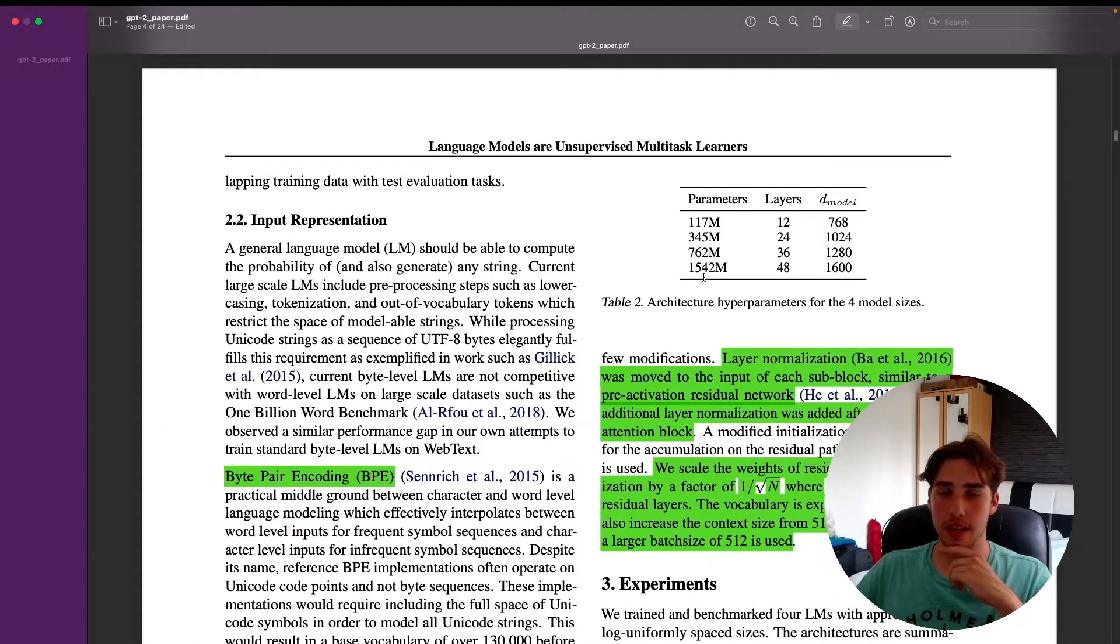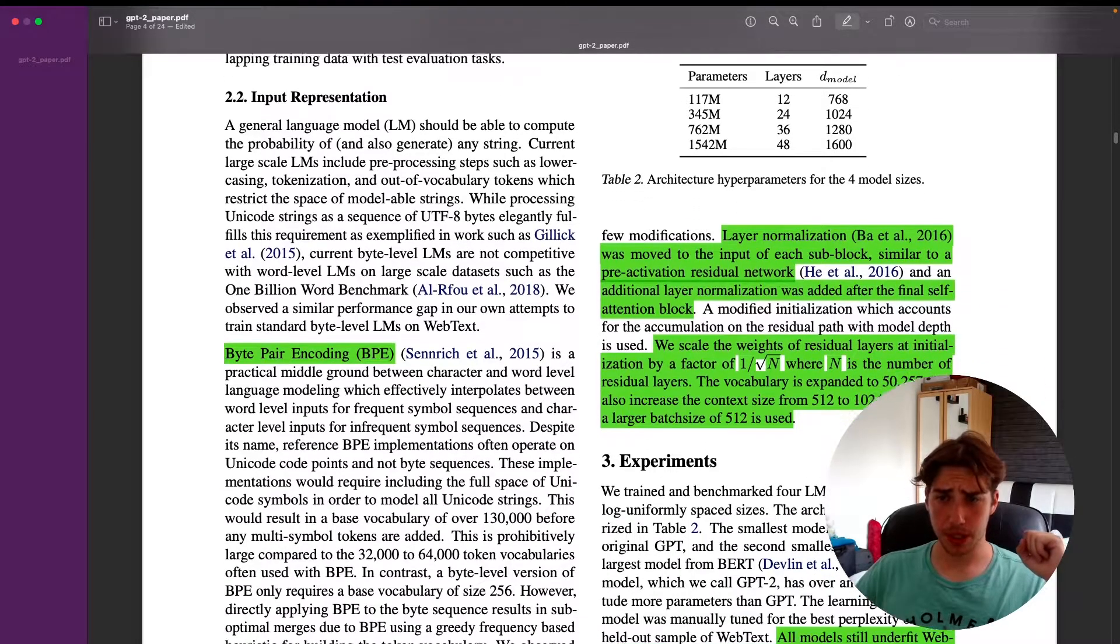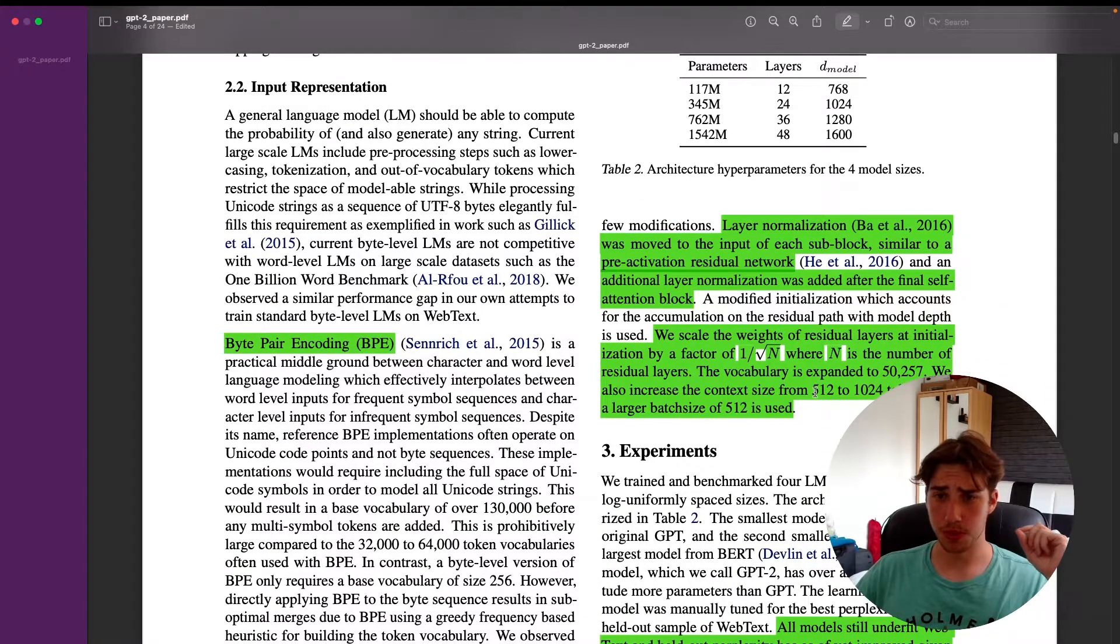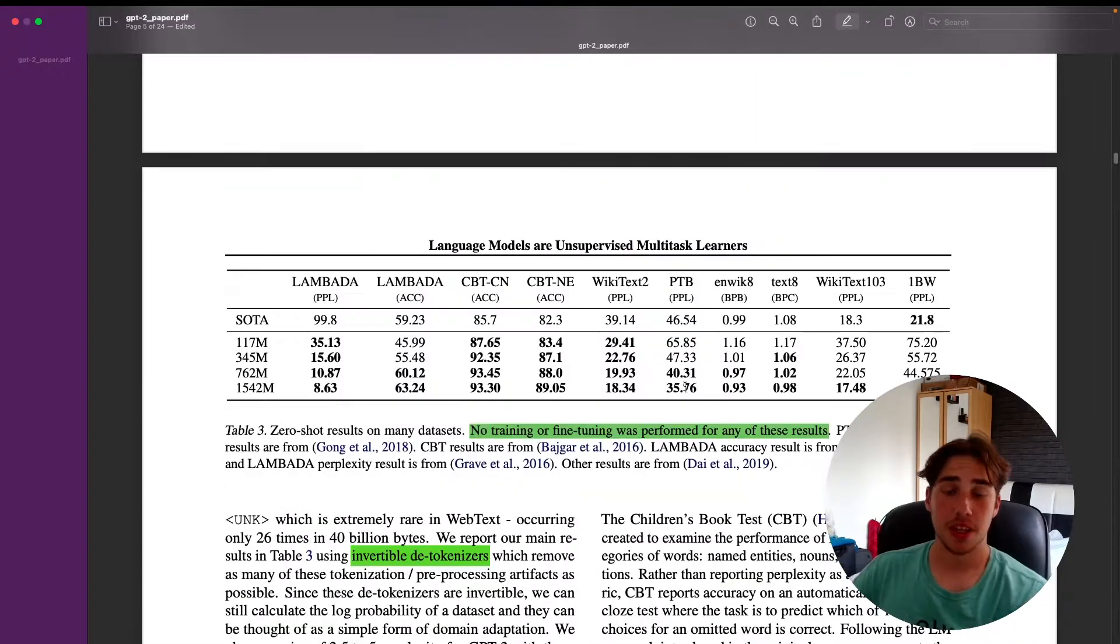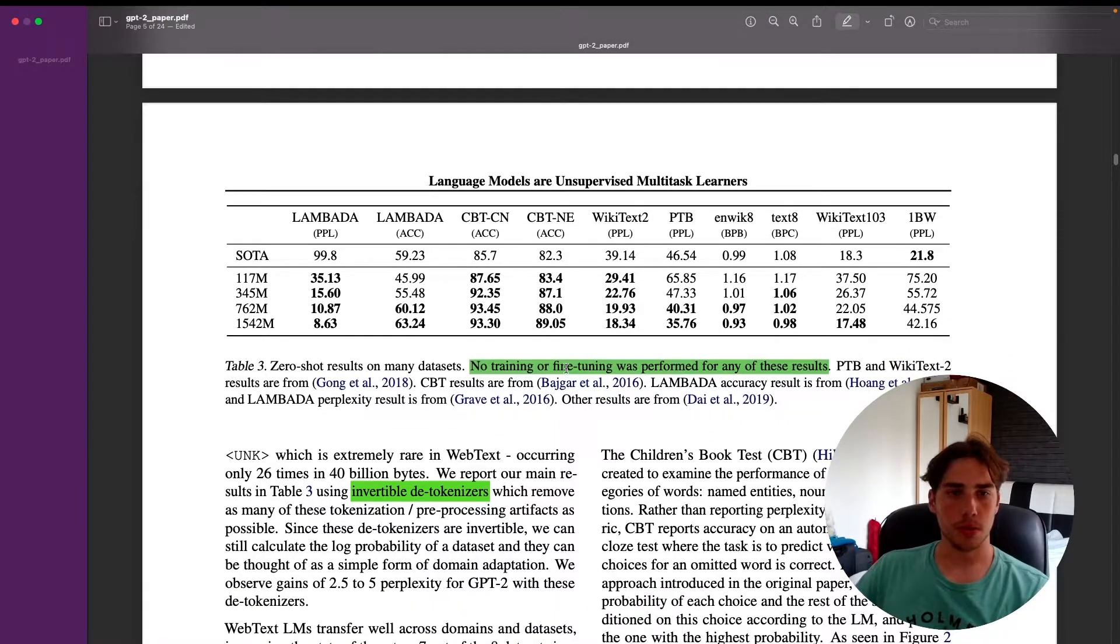As you can see, they also presented four models. The first model has the same parameters as GPT-1. They also presented the medium, large, and this mega model GPT-2. When it comes to architecture, they also used context size—they increased it to 1,024—and a large batch size of 512 is used.